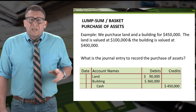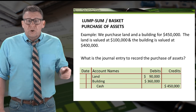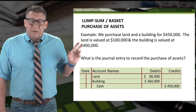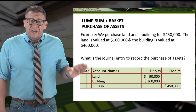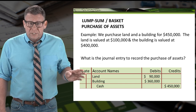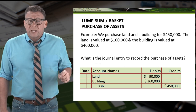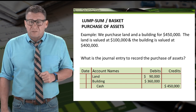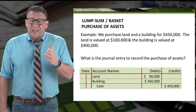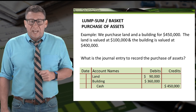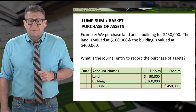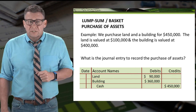Now we can record the purchase of the assets by debiting land for $90,000 and building for $360,000, and crediting cash for $450,000.